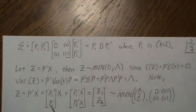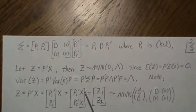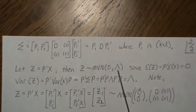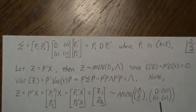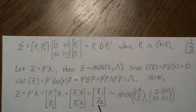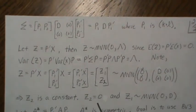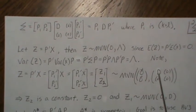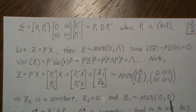More specifically, z = P'x can be partitioned as z1 = P1'x and z2 = P2'x. We showed z is multivariate normal(0, Lambda), where Lambda has D (l-by-l, positive entries) and zeros elsewhere. Since z2 has zero variance, it must be a constant. Since its mean is zero, z2 equals zero. Looking at z1 alone: z1 is multivariate normal(0, D), and D is positive definite.